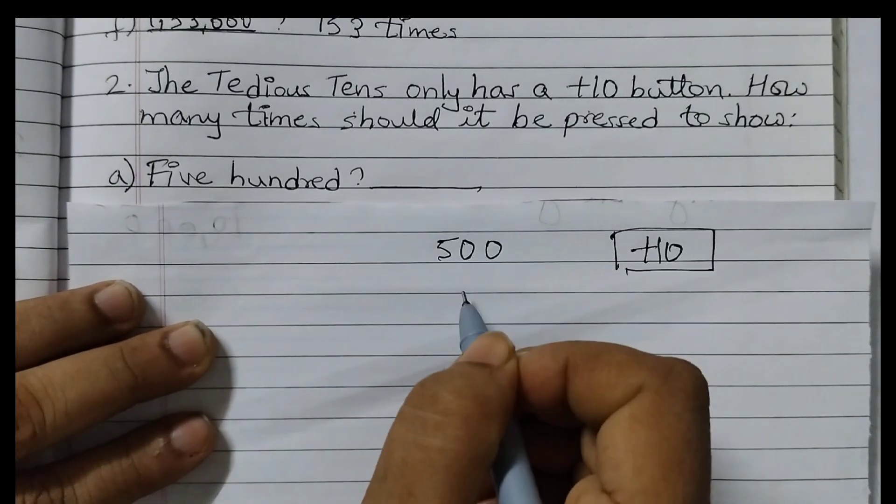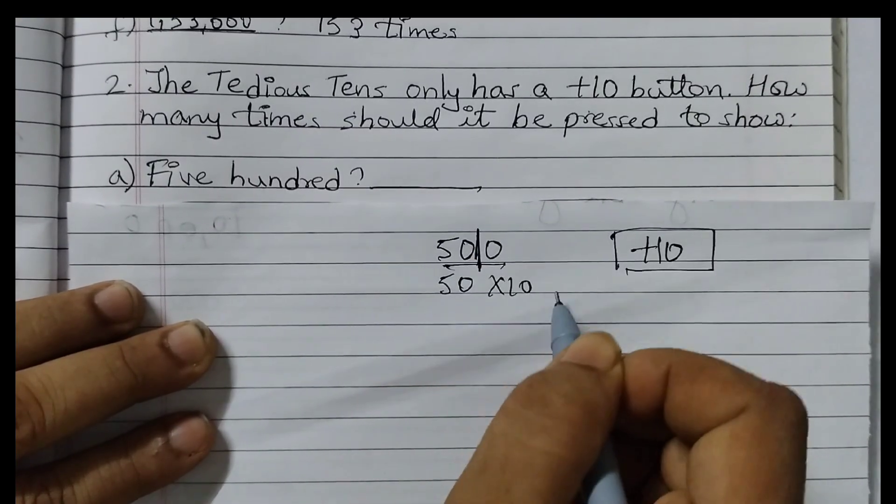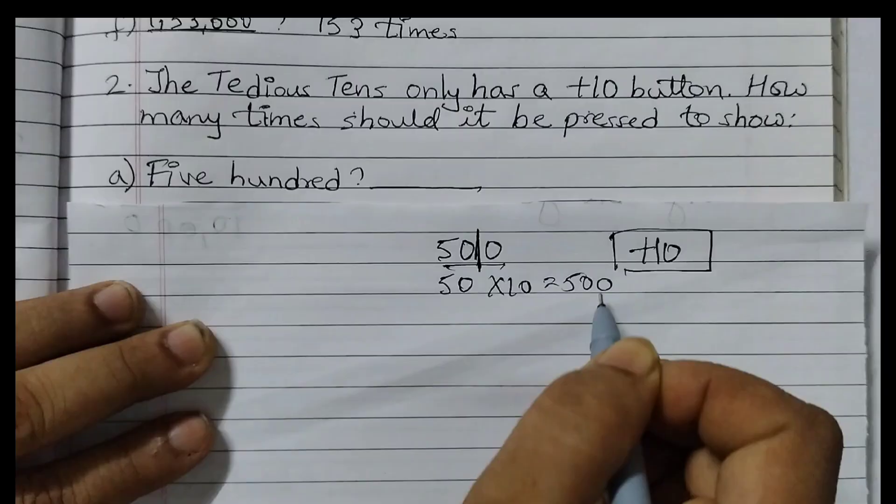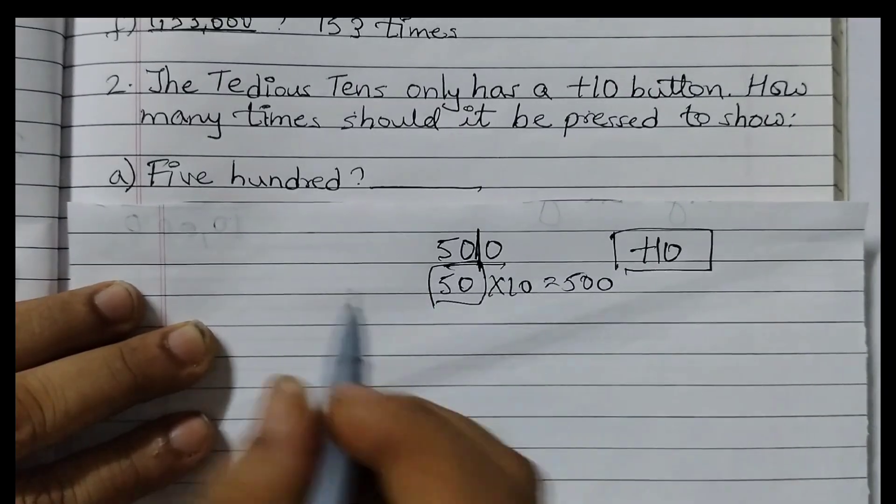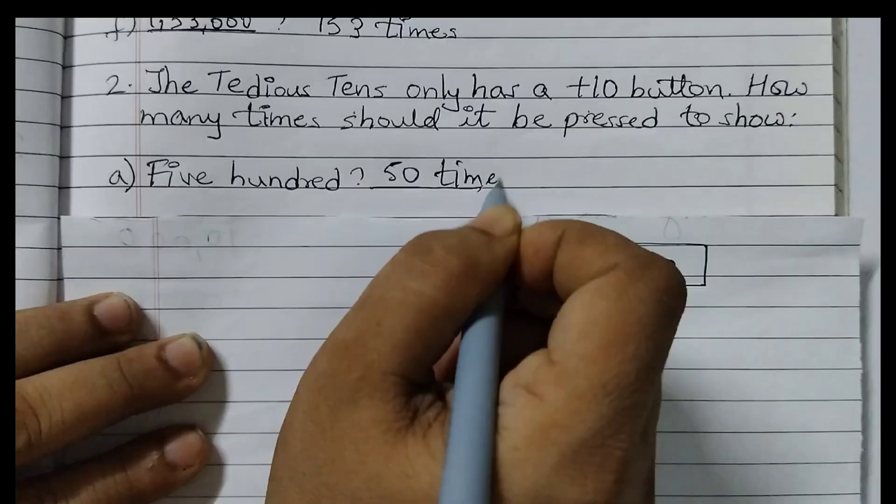500. Now what we will do? We will just put a line here. Because 50 into 10 is 500. So 50 is the answer. 50 times you need to press.